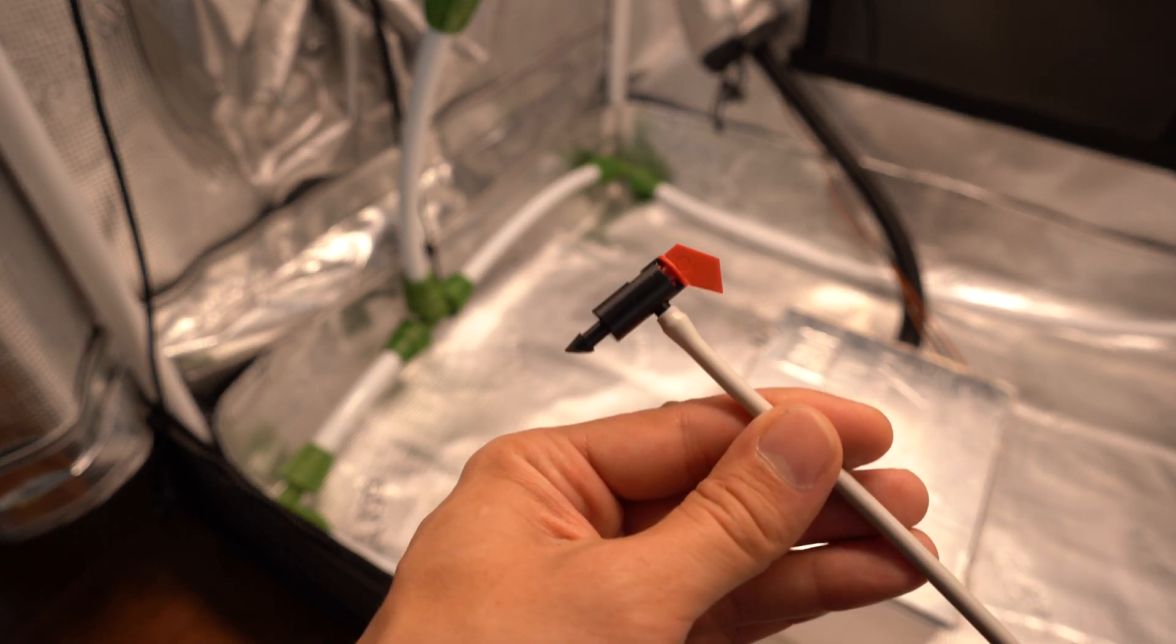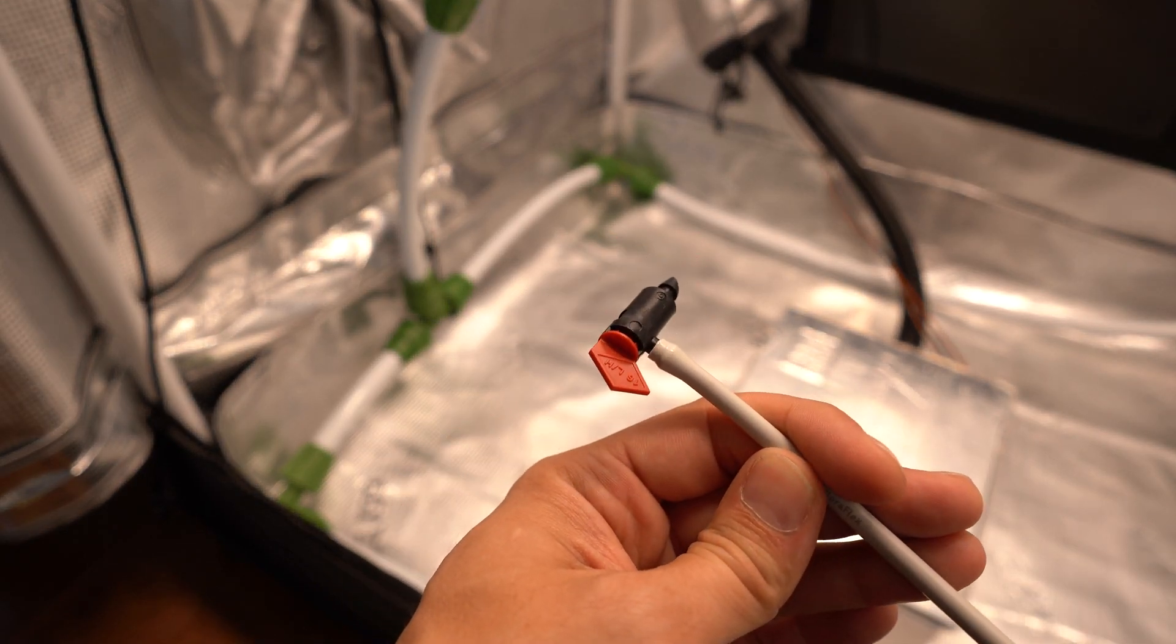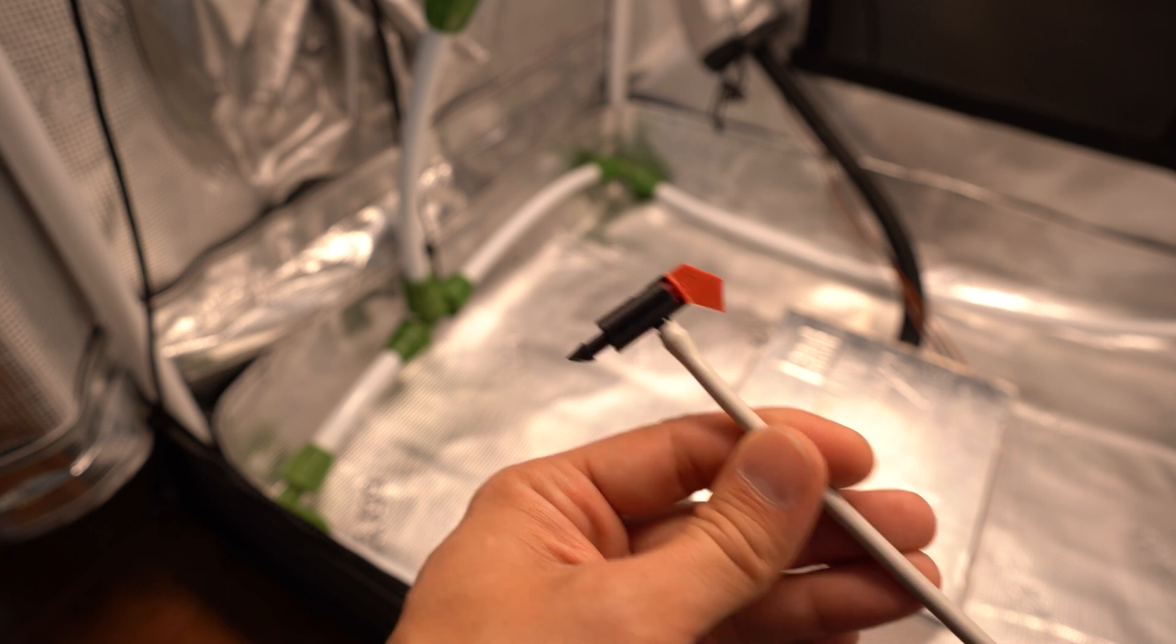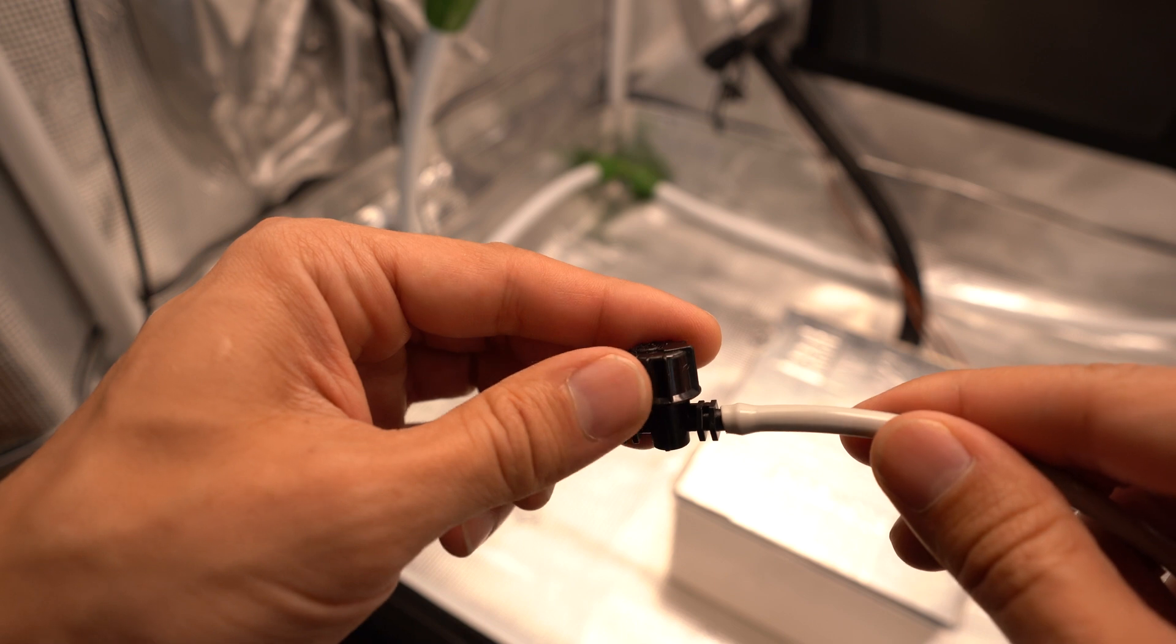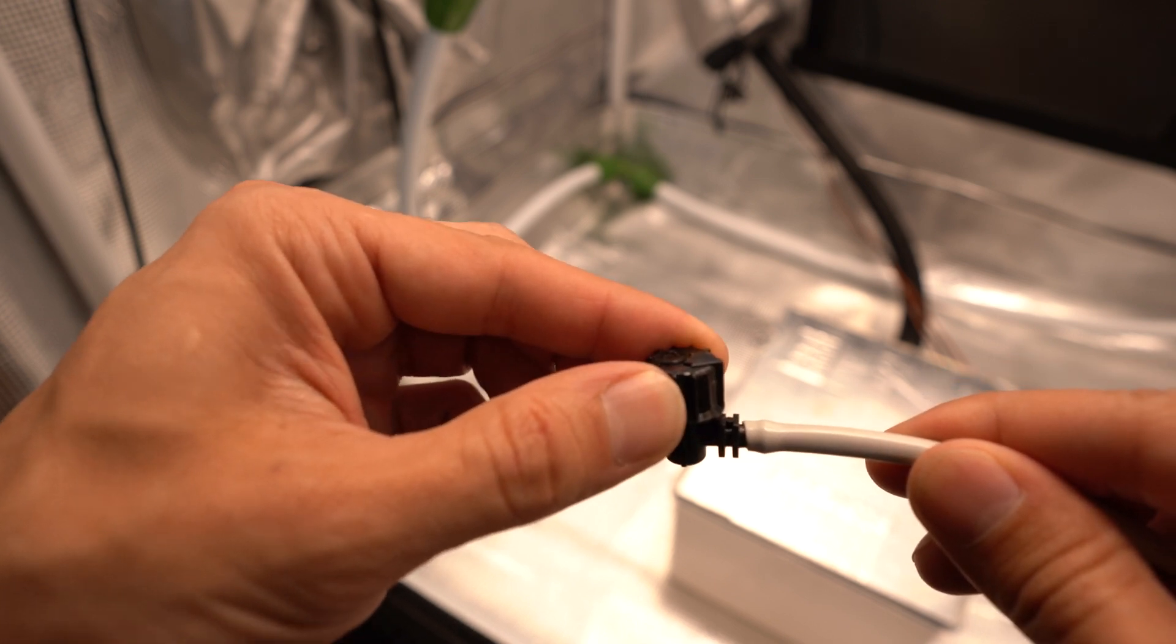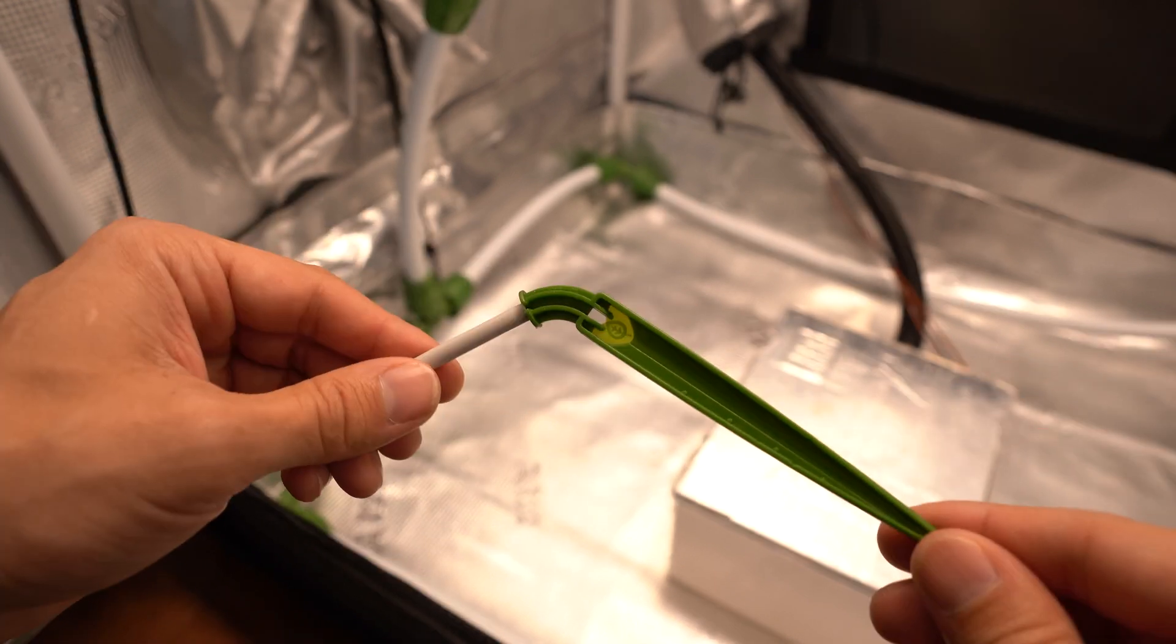Seeing as how I don't have a high pressure pump, I modified the Floraflex drippers and added a non-pressure emitter. I also added a shutoff valve to the line in case I don't want to use all the drippers. On the other end, it's just a simple Floraflex original dripper.